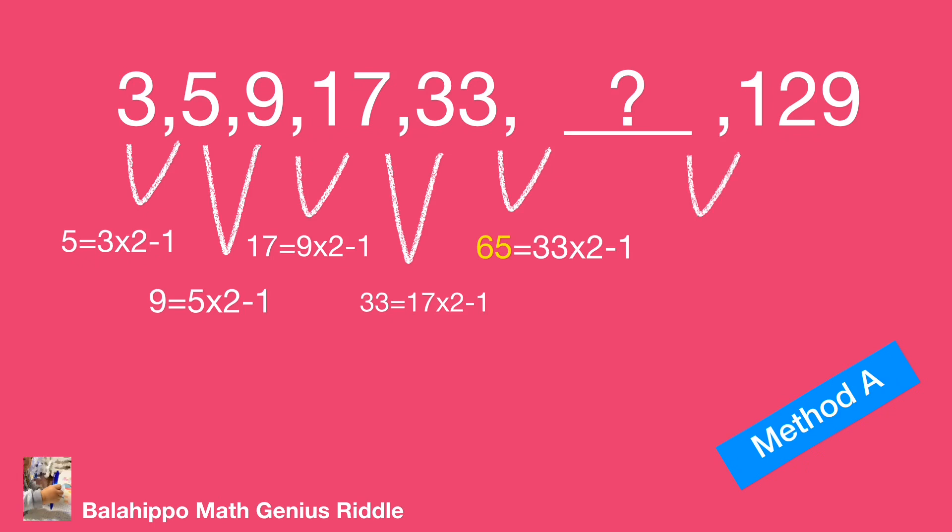Then, take 65 to check the last number. 65 times 2 minus 1 equals 129. Bingo! 65 is the answer.